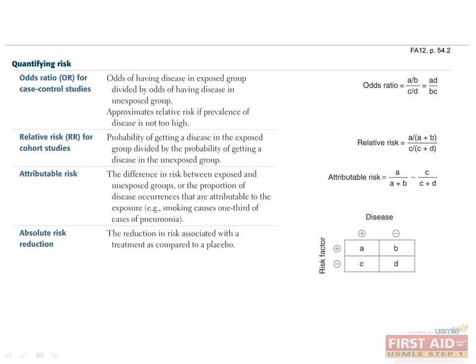The absolute risk reduction is the decrease in risk associated with an experimental treatment as compared to a placebo or control treatment. The attributable risk and the absolute risk reduction are important because they are used to calculate the number needed to treat and the number needed to harm. The number needed to treat is 1 divided by absolute risk reduction, and the number needed to harm is 1 divided by the attributable risk. The number needed to treat and number needed to harm are commonly tested principles on the exam. You can think of the number needed to treat as the number of people you would need to give an experimental treatment to prevent one person from getting the disease of interest. In contrast, the number needed to harm is the number of people you would need to expose to a risk factor in order to cause one person to acquire the disease of interest.